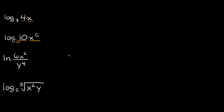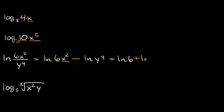Next one, we have a natural log — the natural log of 6x squared over y to the fourth. We have a fraction, so we're dividing. To break up a fraction you subtract the two terms. So this is equal to the natural log of the top, 6x squared, minus the natural log of the bottom, y to the fourth. Now we have two terms being multiplied — 6 and x squared — so we can break up that multiplication with a plus sign.